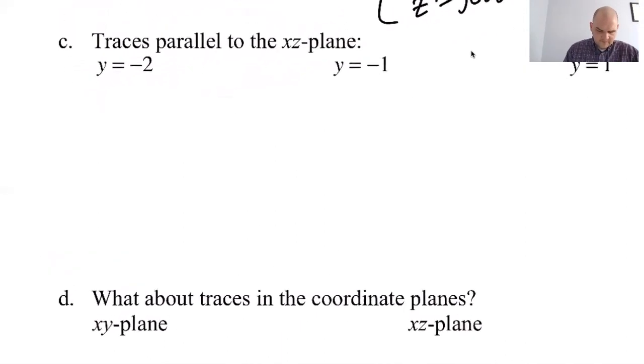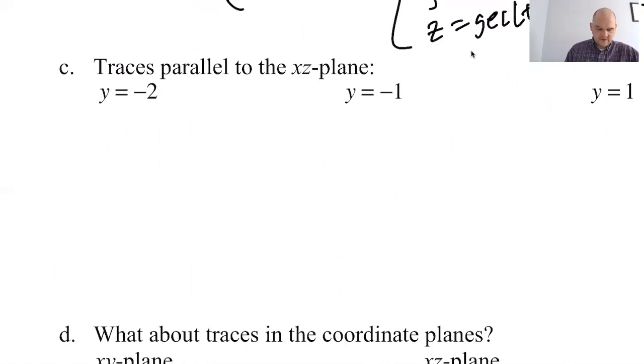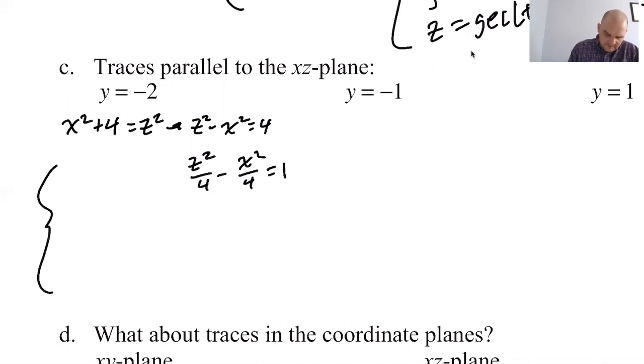So let's do this. These are going to look a lot like the thing that just scrolled past, right? So we get x squared plus 4 equals z squared. And we rearrange that. z squared minus x squared equals 4. Then we divide by 4. So we get z squared over 4 minus x squared over 4 equals 1.